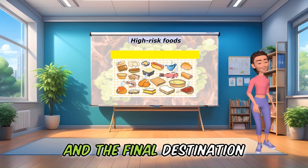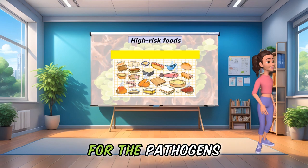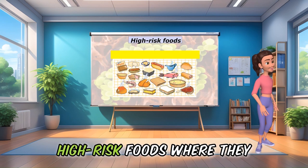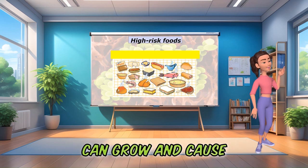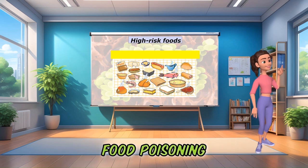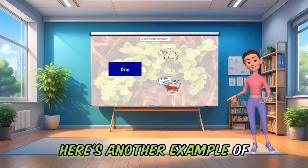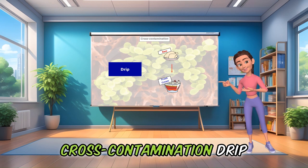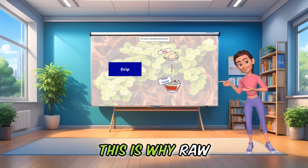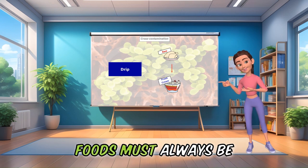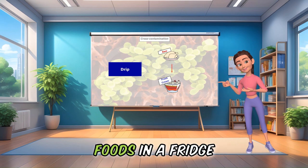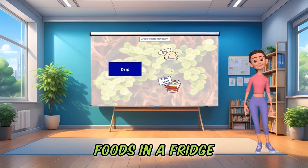And the final destination for the pathogens: high-risk foods, where they can grow and cause food poisoning. Here's another example of cross-contamination — drip. This is why raw foods must always be kept below high-risk foods in a fridge.